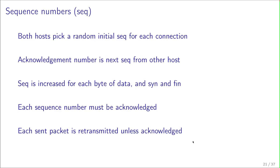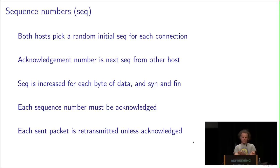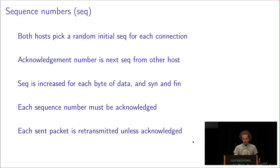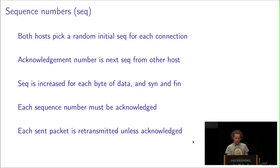It is a good idea for both hosts to pick a random initial sequence number for each connection — otherwise we can get into some nasty attacks. The acknowledgement number is the next expected sequence number from the other host. The sequence number is increased for each byte of data and for the SYN and FIN flags. Each sequence number must be acknowledged, and each sent packet is retransmitted unless acknowledged within a timeout. After several retransmit attempts, the TCP stack gives up.